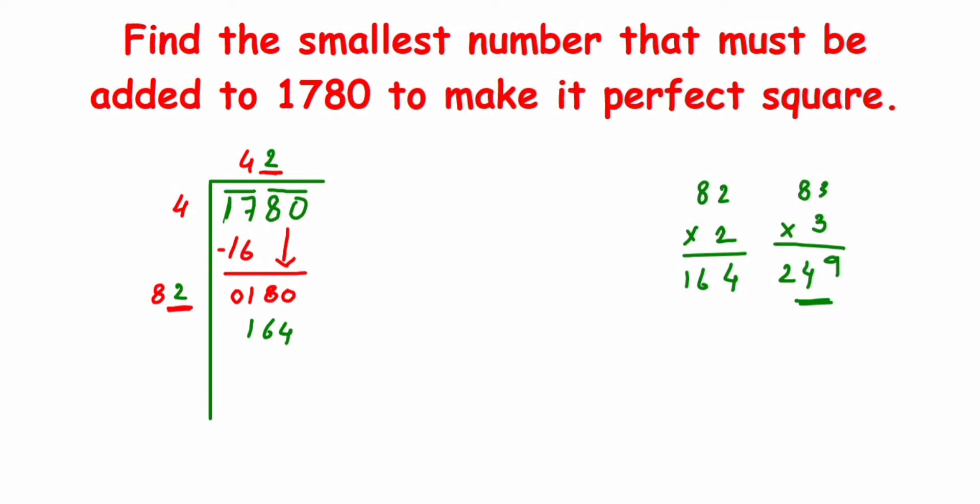We'll just subtract it. Once you subtract here, you will get the remainder as 16. We got the remainder 16. This means that this given number is not a perfect square.